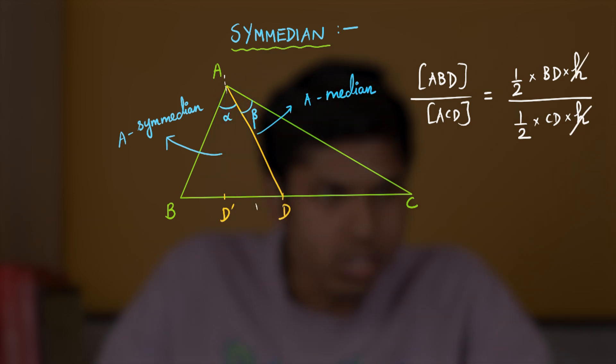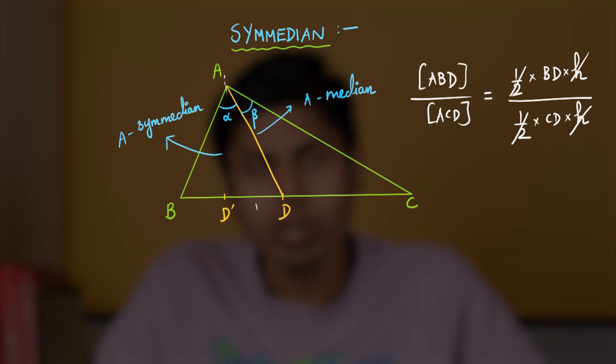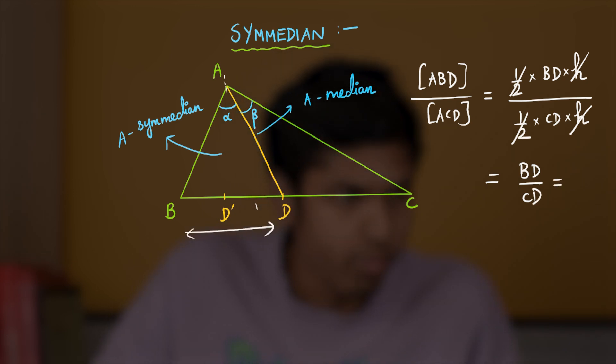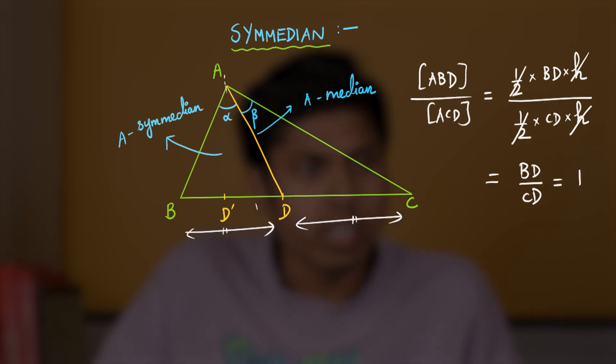So, we may cancel H from numerator and denominator and the half also goes off and BD by CD is what will remain. But BD equals CD because that's the definition of midpoint. BD equals CD. So, we get the ratio to be 1.